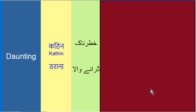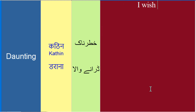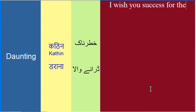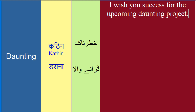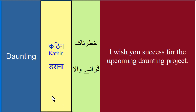Sentences banaate hain word daunting ko achi tarah use karne ke liye. Jis tarah mein keh sakta hoon: aage koi bahut zyada mushkil project aa raha hai aur aapne wo karna hai. Toh mein kehta hoon — I wish you success for the upcoming daunting project.